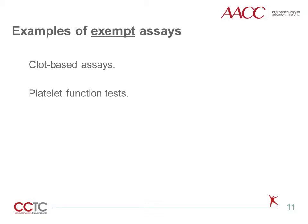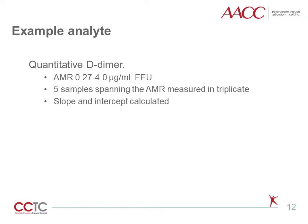Some applicable assays are available in routine or STAT laboratory settings as well as reference laboratory settings. Not all coagulation assays are calibratable, and thus these requirements will not apply. Examples of exempt assays include clot-based assays and platelet function tests. We will now apply these concepts to a specific example: quantitative D-dimer. In this example, the AMR of the assay is 0.27 to 4.0 micrograms per milliliter. The linearity experiment consisted of analyzing five samples spanning the AMR, each measured in triplicate. Linear regression analysis was performed and slope and intercept were calculated. The source of the samples was a commercially produced kit.